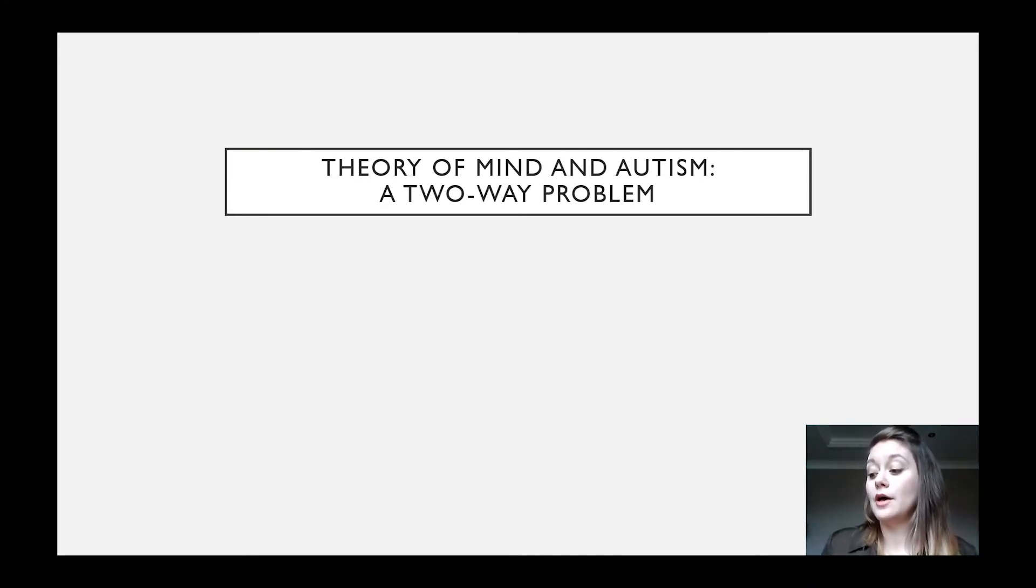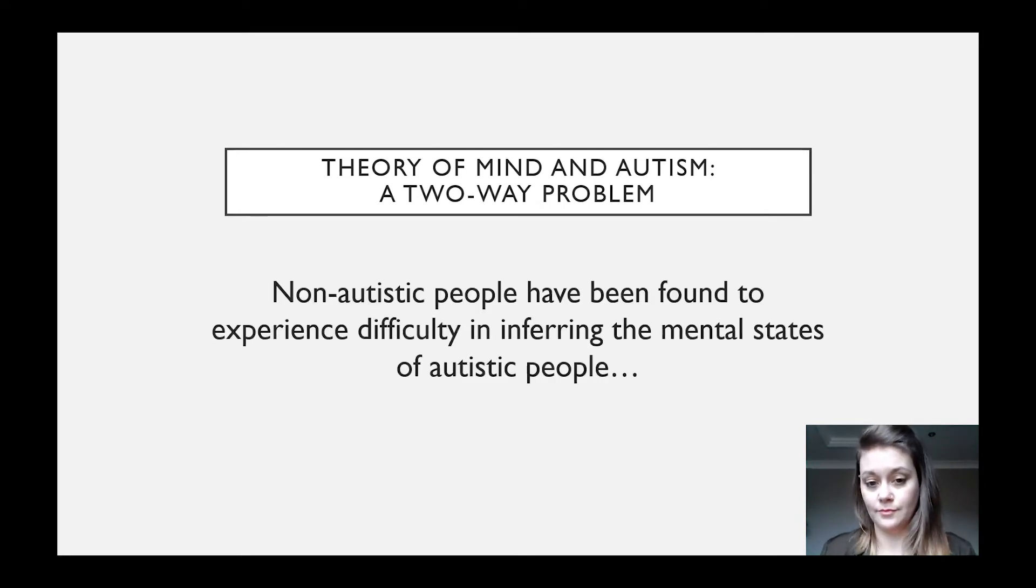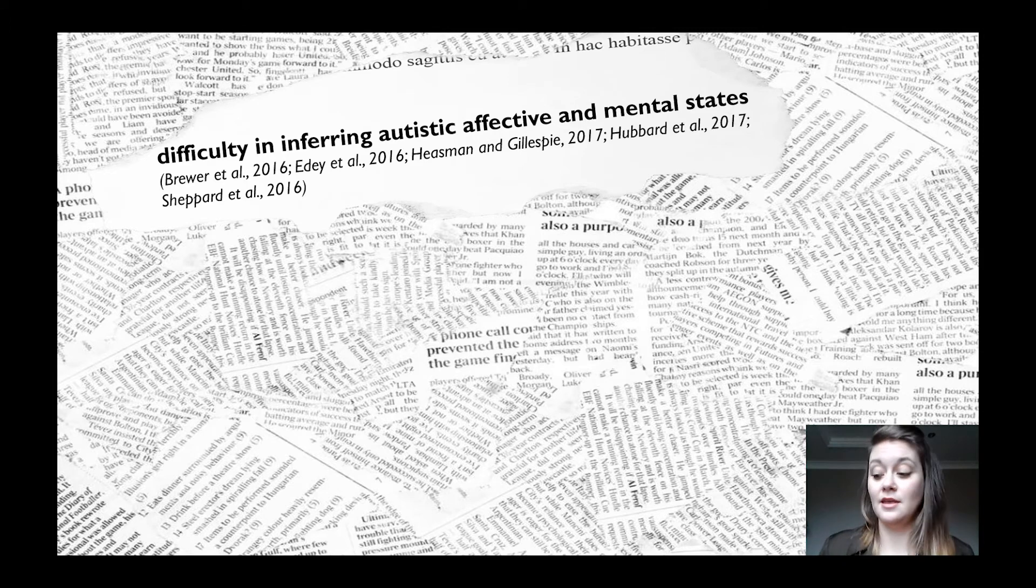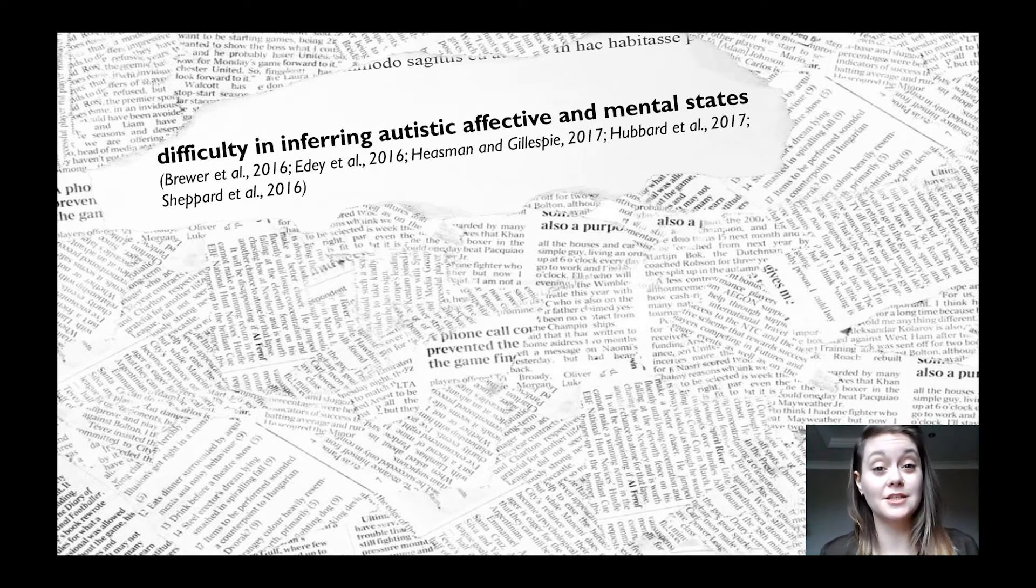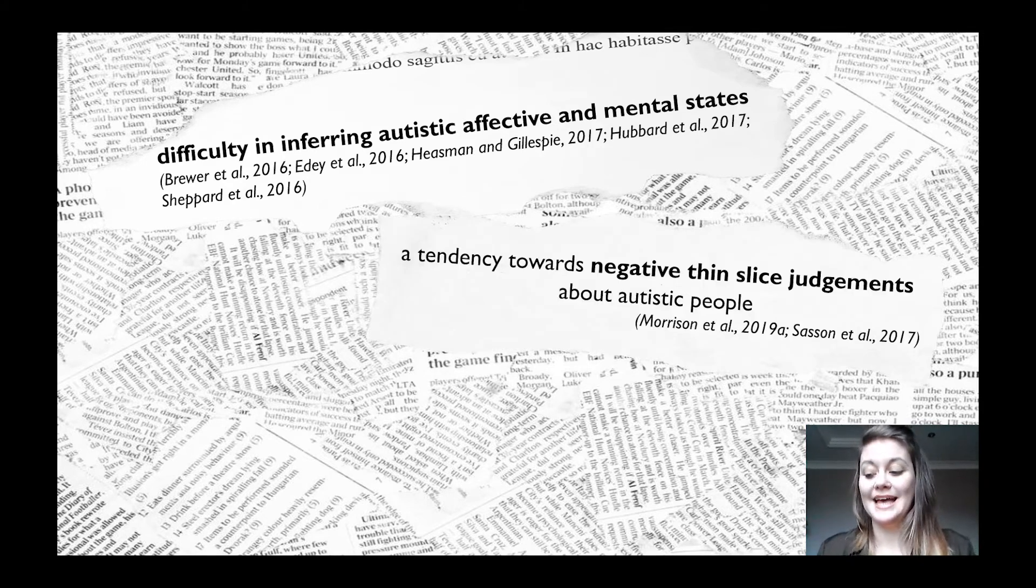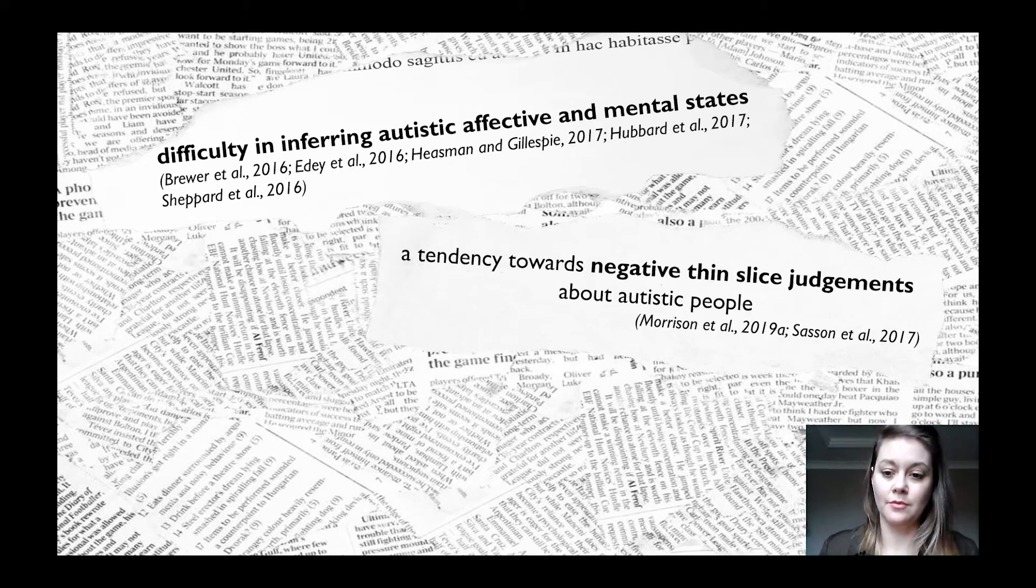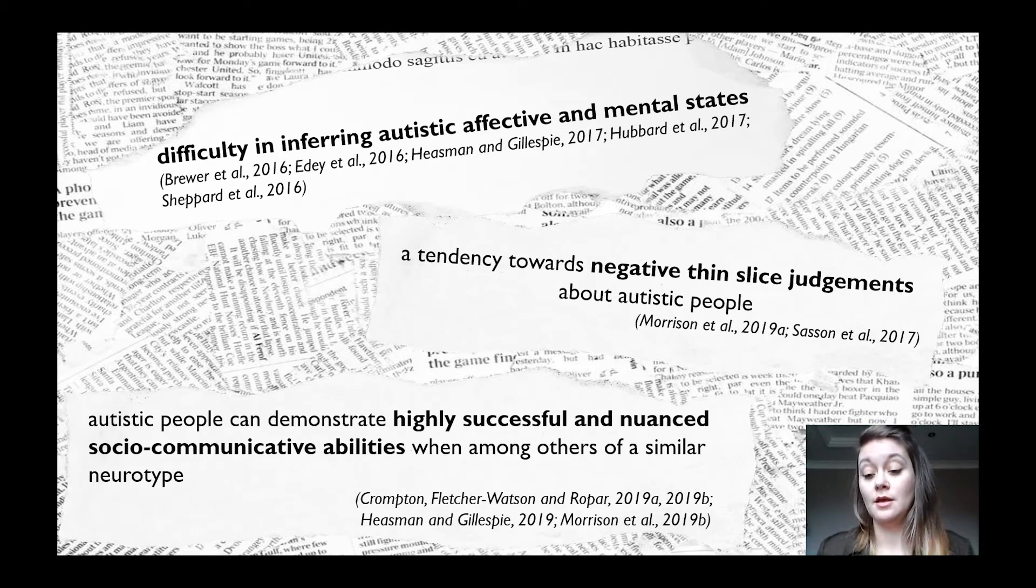Much more recent empirical autism research, situated largely in the social sciences, has begun to illuminate the difficulties that non-autistic people also experience in understanding autistic people. These have included difficulty in inferring autistic affective and mental states, including difficulty reading autistic facial expressions, and a tendency toward negative thin slice judgments. Some research has also highlighted how autistic people can demonstrate highly successful socio-communicative abilities when among others of a similar neurotype, with other autistic people.